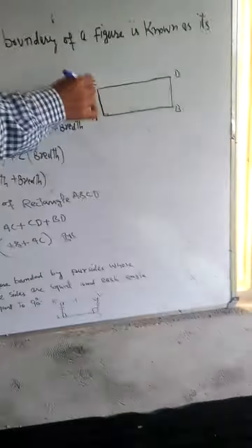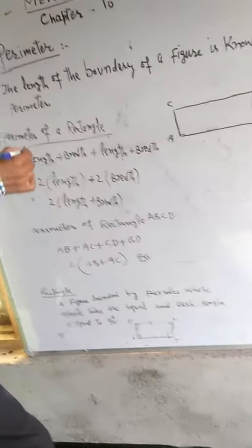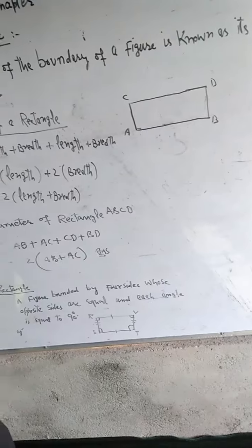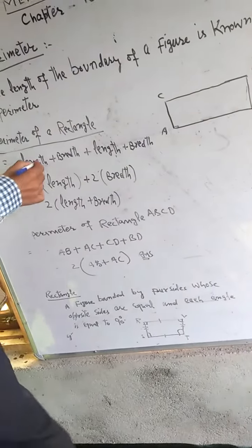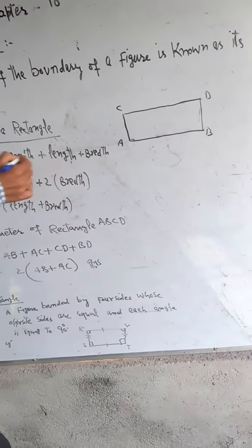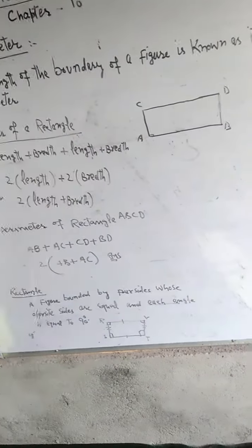For example, perimeter is length plus length plus breadth plus breadth. If you see all sides, you have length and length, breadth and breadth.